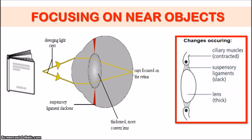So the ciliary muscles contract, the suspensory ligaments slacken, and the lens becomes thick. The thicker the lens, the more refraction would occur. So the divergent light rays coming from the book — the light rays are a little more spread out because the object is so close to our eyes — we need to get those light rays bent in more. That is why the lens has to become fatter to produce more refraction, to allow more bending so that the light rays can focus on the retina. Note that if you bring the book extremely close, there is a limit to the thickness the lens can get, which is why the image appears blurry.